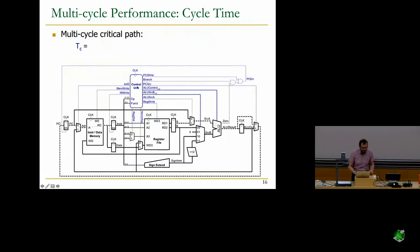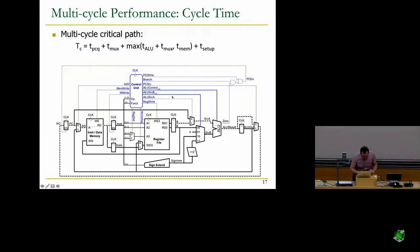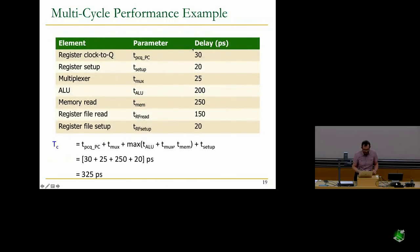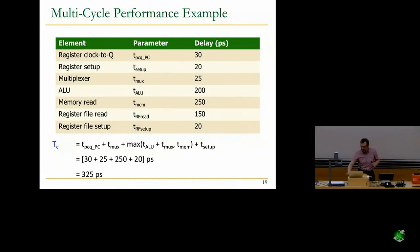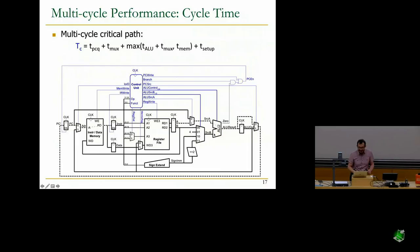We also need to compute the cycle time. The multi-cycle critical path goes through the ALU, MUX, and memory, plus register read delay, MUXing delay, and register setup delay. Because we've broken execution into stages, it's not the entire machine — your critical path is really in this one stage. Plugging in the numbers gives 325 picoseconds, much better than 925. We've increased the clock frequency by ensuring each instruction takes multiple cycles with a smaller cycle time.